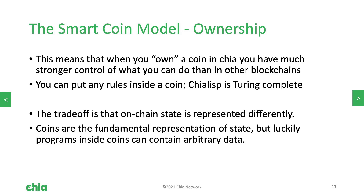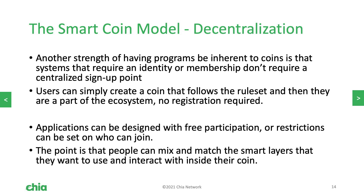The downside to the coin model is that the natural representation of data and state is a little bit different — everything is coins. So when you build systems, you have to have this coin-first approach. But that can be a strength as well, because by making coins the primary object, systems are inherently decentralized. Imagine a system where you want someone to have an identity or sign up for membership. In a smart contract, this would be a sign-up transaction you'd have to make — you'd have to inform the smart contract to be aware of you, going through this point of centralization. In the coin model, you can simply create a coin that follows the rules and has the identity format. This is much more decentralized, and the intrinsic value of that identity is inside of it, rather than being delegated to a smart contract that exists somewhere else. And once you have your identity, that's just one layer on the diagram that you can mix and match.